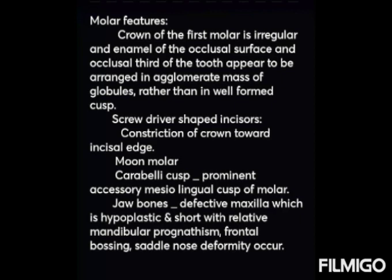Moon molar, also known as mulberry molar, is present. Carabelli cusp — a prominent accessory mesiolingual cusp of the molar — is also seen. In jaw bones, there is a defective maxilla which is hyperplastic and short, with relative mandibular prognathism, frontal bossing, and saddle nose deformity. These are the important oral manifestations of congenital syphilis.